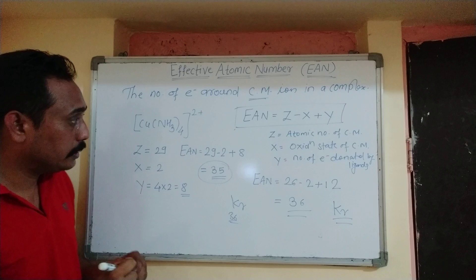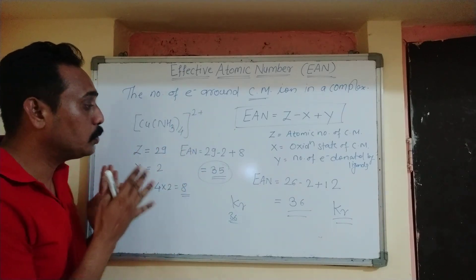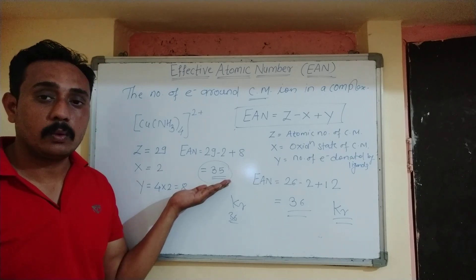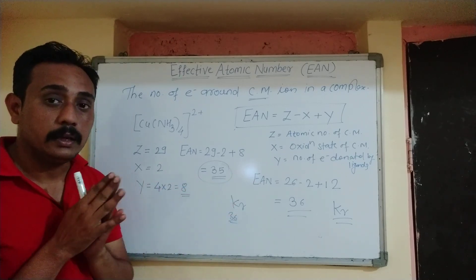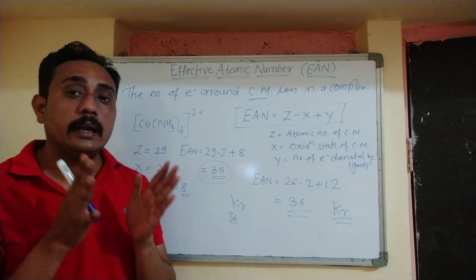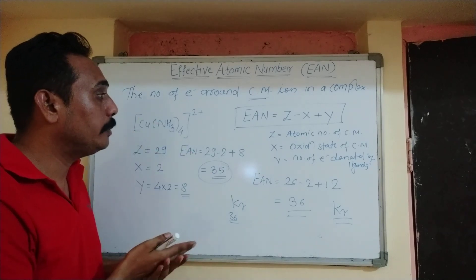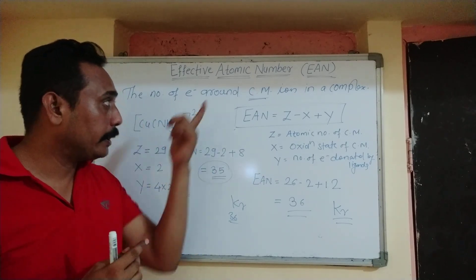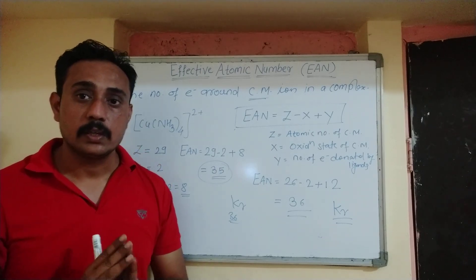This is not exactly the atomic number of the next rare noble gas, krypton, which is 36 — here it comes to 35. So there are certain exceptions to the Effective Atomic Number rule; some elements do not achieve the exact nearby noble gas electron configuration. The importance of EAN is to help identify how many ligands are present around the central metal. Thank you.